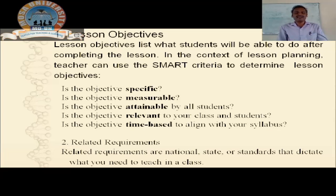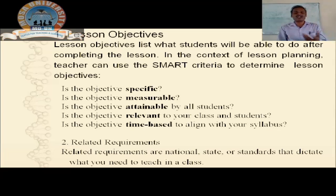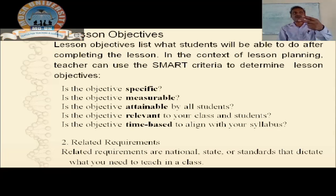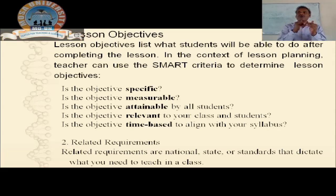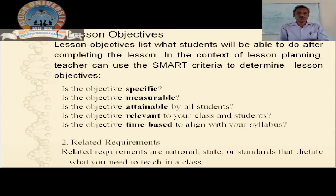Related requirements: these are set at national level, state level, or institutional level, and dictate what you need to teach in your classrooms. For example in Zambia, the Zambia Qualifications Authority sets standards — standard six for diploma programs, standard seven for degree programs, and standard eight for master's degree programs. You need to follow the standards set by national bodies, state bodies, or the institution itself.